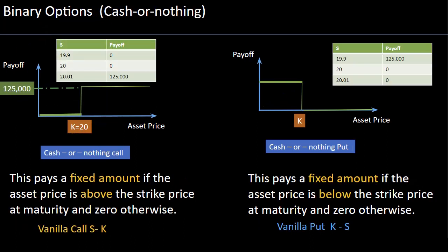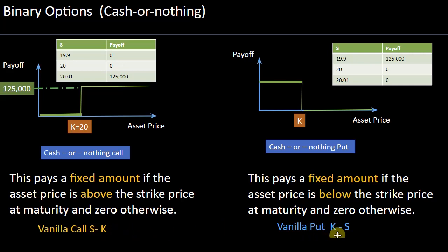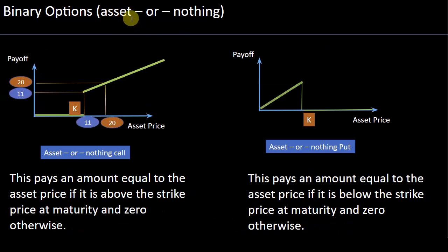A key difference from plain vanilla options: in a standard call option you take the difference between the underlying and the strike, and in a put option you take the difference between the strike and the underlying. But in a binary option we do not take differences — it's either a fixed amount in a cash-or-nothing, or the value of the asset in an asset-or-nothing binary option.